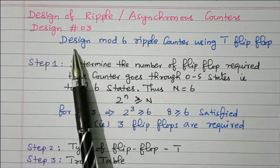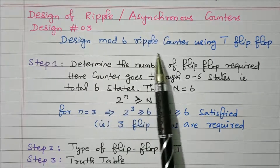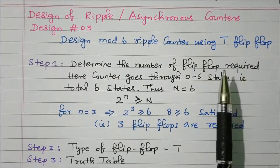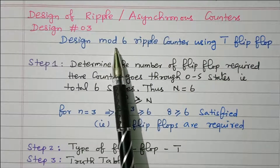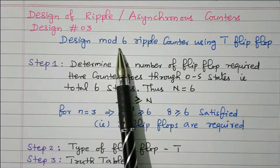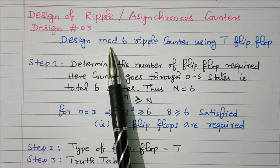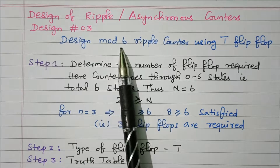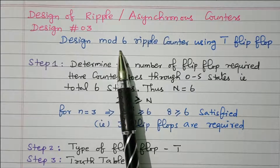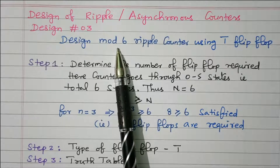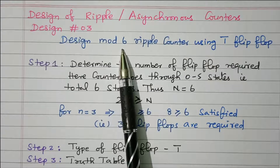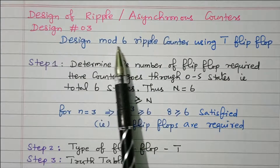In this we are going to see the Design of Mod 6 Ripple Counter using T flip-flop. What is a Mod 6 Counter? There are 6 outputs. Remaining outputs are disabled — that is called Mod 6. Mod 5 means 5 outputs. For Mod 6, we definitely need 3 bits: 2 to the power 3 gives 8 outputs, so only 6 outputs will be available and outputs 7 and 8 will be disabled. That is called a Mod Counter.